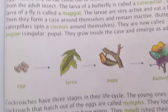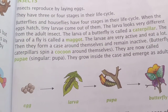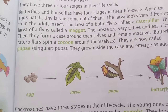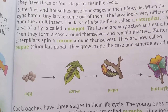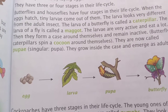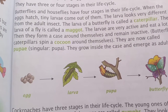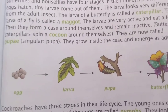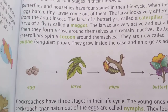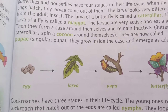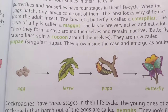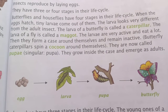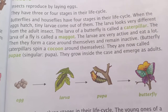After the egg stage, they become larva. They eat many leaves and then come to the pupa state, which is a hibernated state where they are inactive. Then the next stage is the butterfly stage. Butterflies and houseflies have 4 stages in their life cycle.